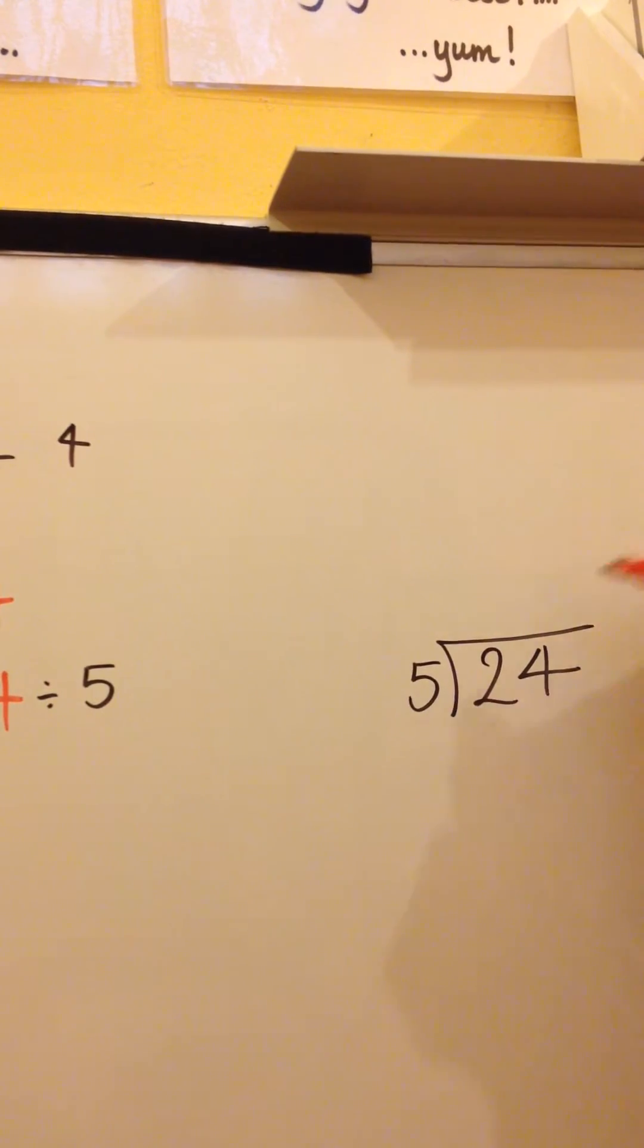How many fives in 2? You get 0, carry forward the 2. Now I know when I do fives into 24, I'm going to get a remainder, so I'm going to put a decimal point in here and here, and add three zeros, though I might not need them all. How many fives in 24?